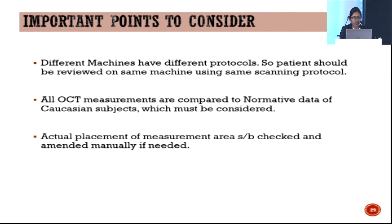Important technical considerations: different machines have different protocols, so patients should be reviewed on the same machine using the same scanning protocol. All OCT measurements are compared to normative data derived from Caucasian subjects, which must be considered. Actual placement of the measurement area should be checked and amended manually — segmentation must be correct in order to properly analyze the report.